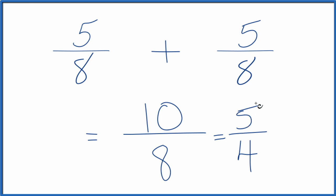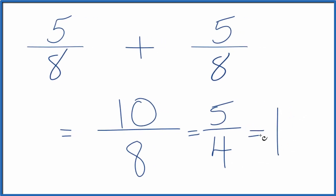This is an improper fraction because 5, the numerator, is greater than the denominator 4. So we could change it to a mixed number. Four goes into 5 one time with one left over, and then we'll put 4.